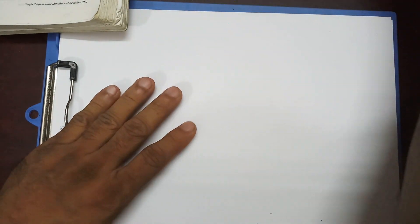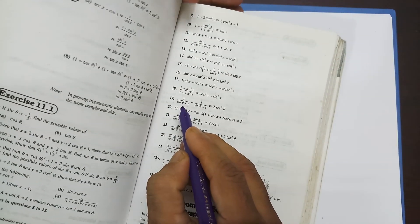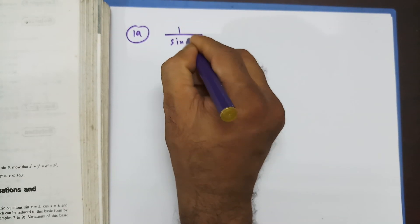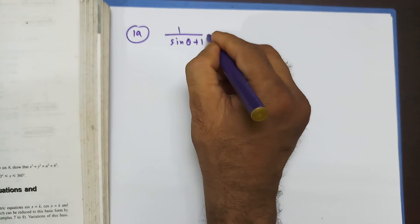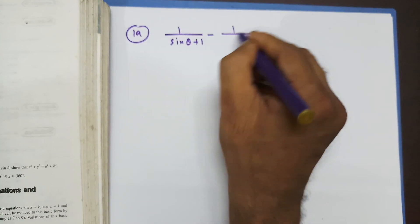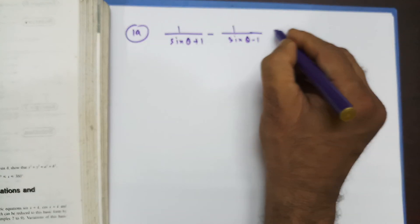Let's start question number 19. It's saying that 1/(sinθ + 1) minus 1/(sinθ - 1) is identical to 2sec²θ.